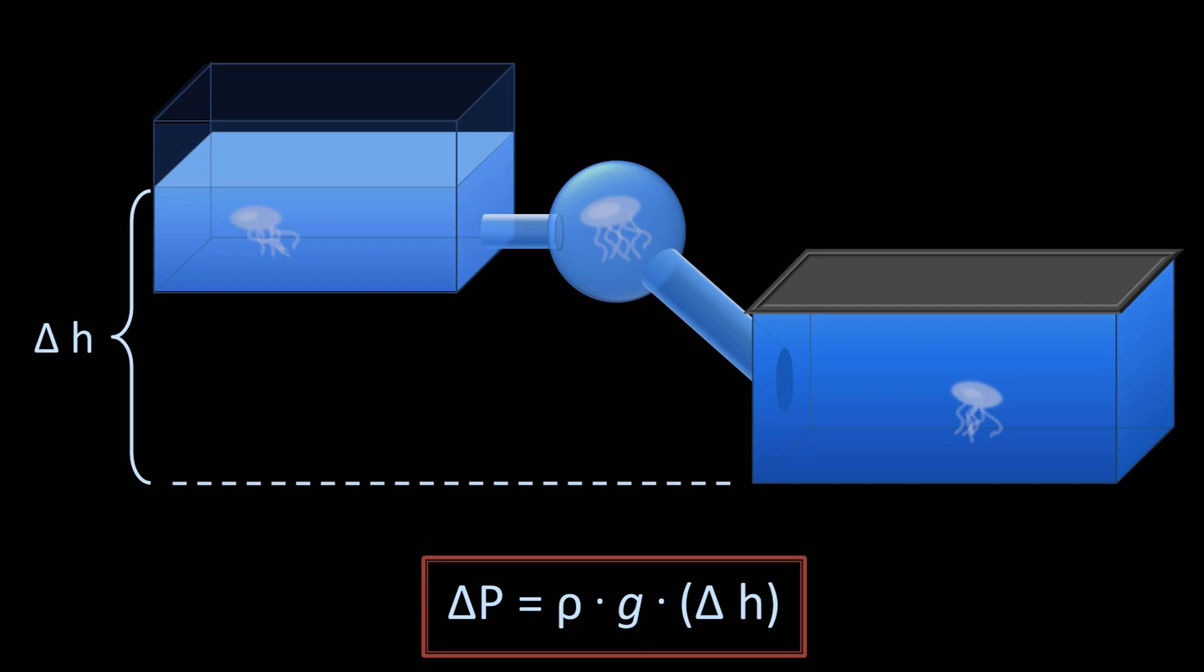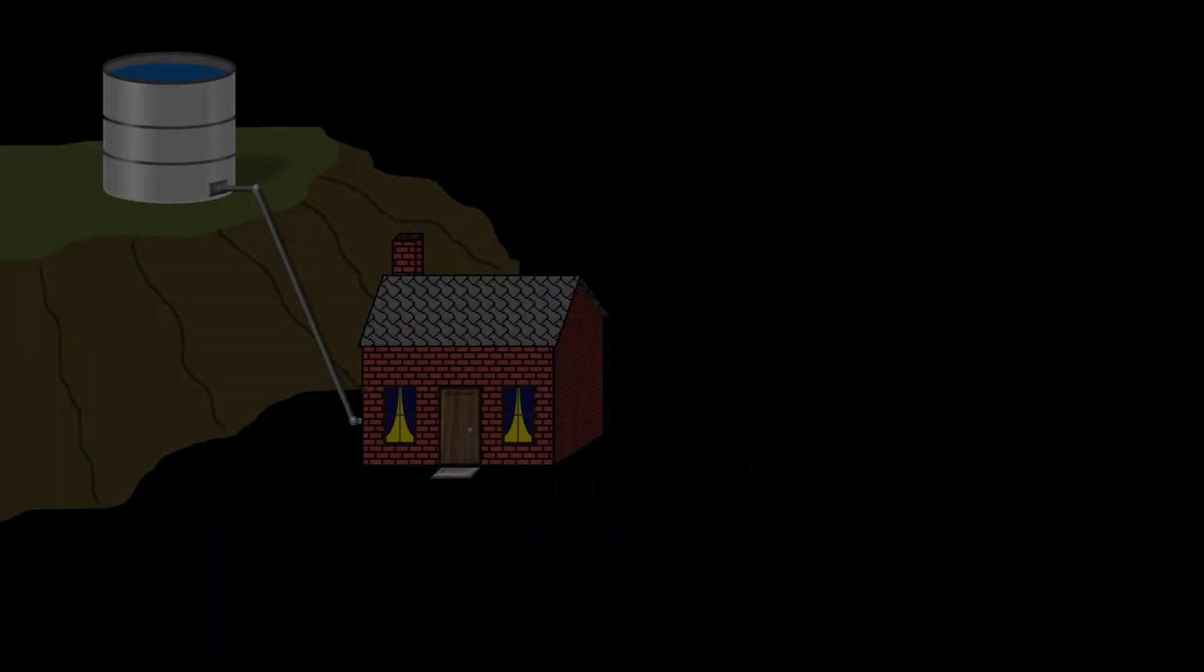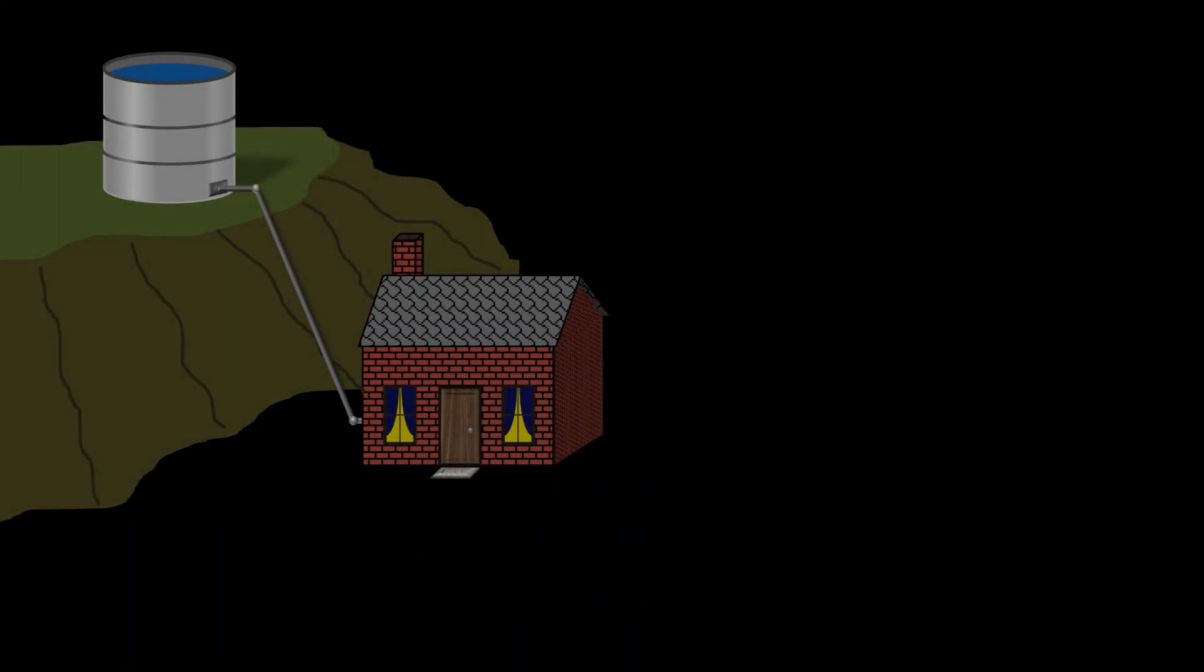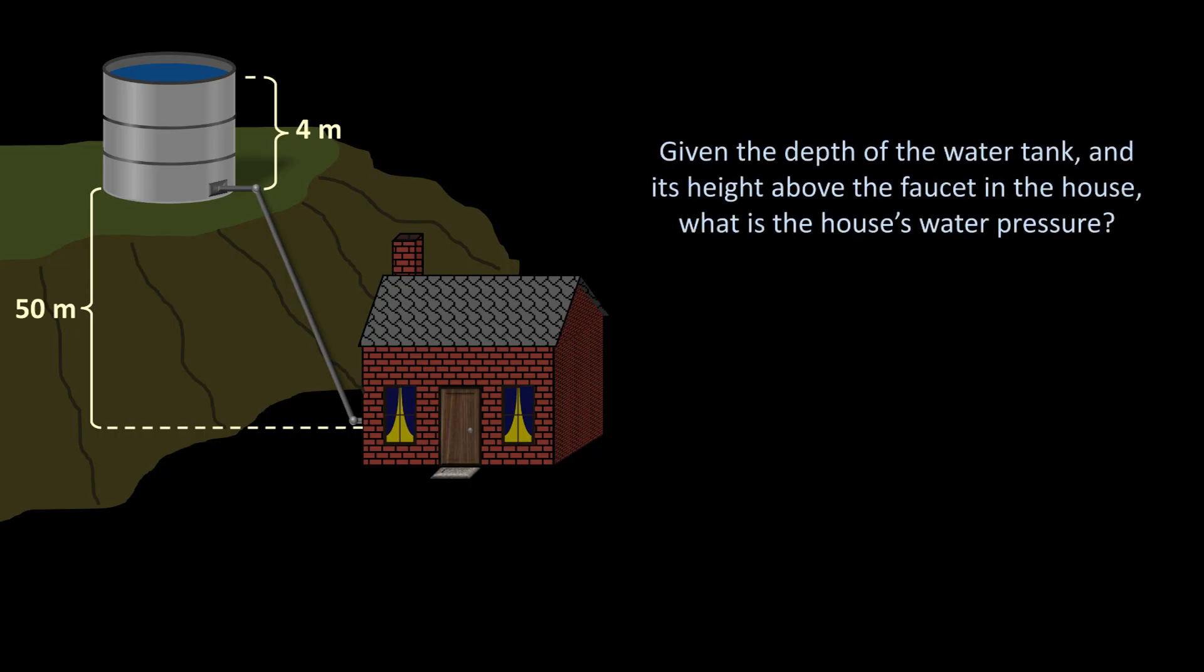Let's look at a quantitative real-world example of hydrostatic pressure. We have a house at the bottom of a hill, which gets its water supply from an open, unpressurized water tank at the top of the hill. The water tank is 4 meters high and full, and the base of the tank is 50 meters above the level of the house's faucet. Given these distances, what is the house's water pressure?